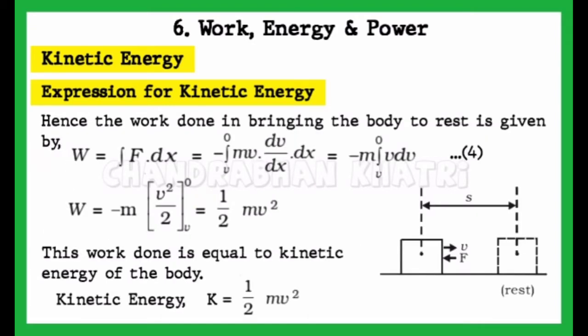Hence the work done in bringing the body to rest is given by W = ∫F·dx = -∫[v to 0] mv(dv/dx)·dx. After simplifying, we get W = -∫mv dv. This is equation 4.